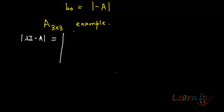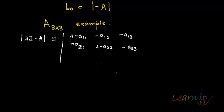So what we are looking at is λI minus A. That will equal to: λ minus A11, minus A12, minus A13 in case of a 3 by 3; minus A21, λ minus A22, minus A23; minus A31, minus A32, λ minus A33.